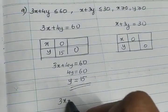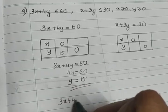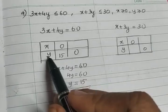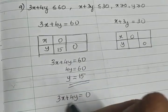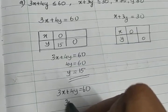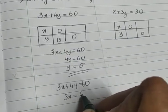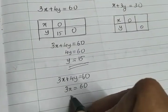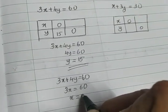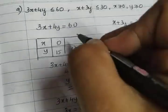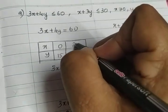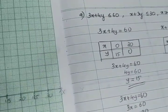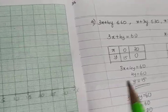In the same equation 3x plus 4y equal to 60, substitute the value of y as 0. What we are getting is 3x equal to 60, so x is equal to 60 divided by 3, which gives you the value 20. So we are getting two points: one is (0, 15) and the second one is (20, 0).